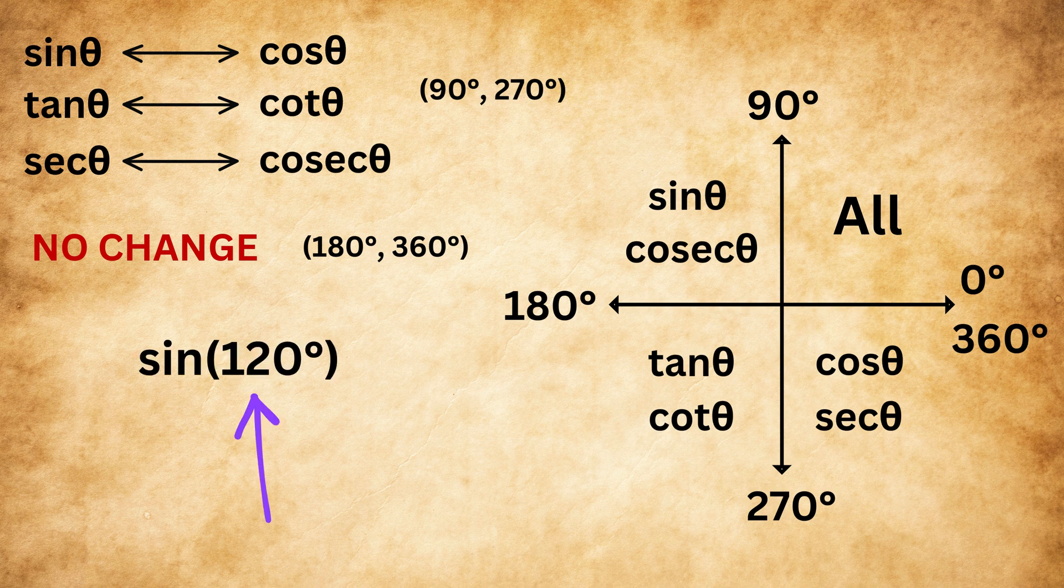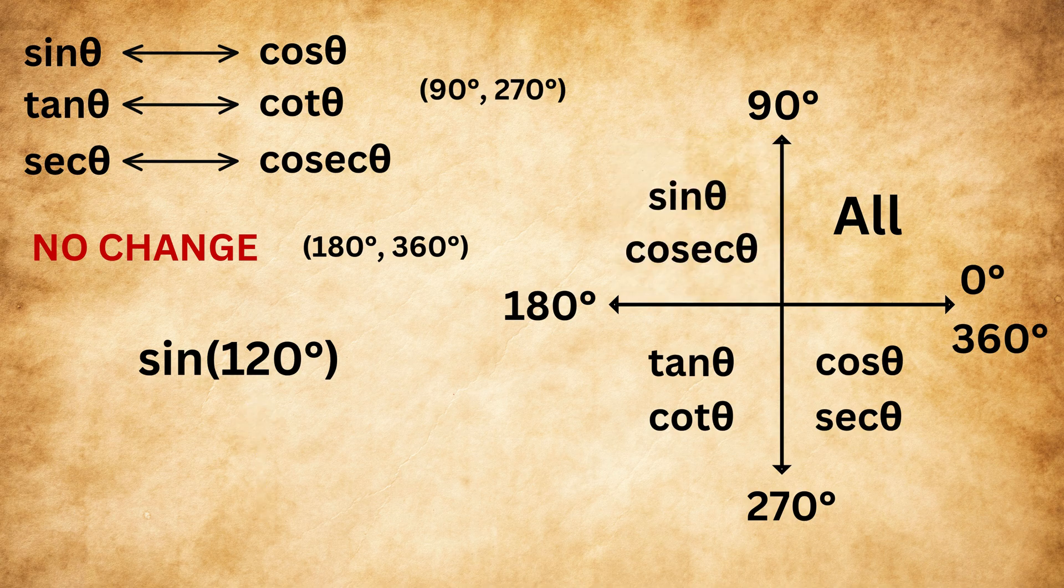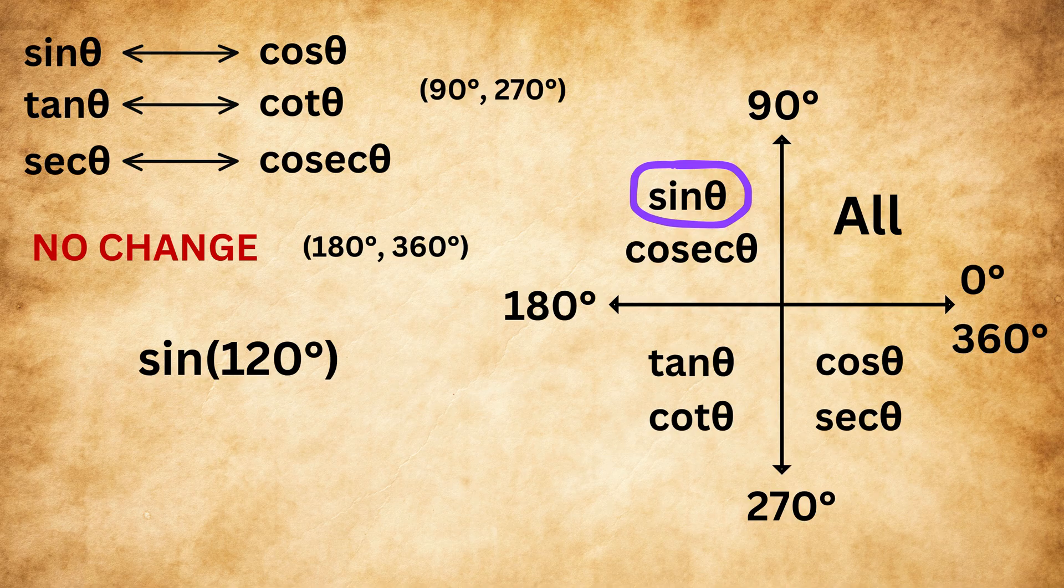Suppose we have to find the value of sine 120 degrees. First, check where 120 lies. It is between 90 and 180 degrees, so it's in the second quadrant. From the rule we just learned, in the second quadrant, sine is positive. So we'll keep a positive sign.